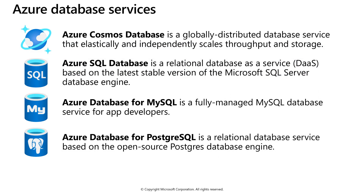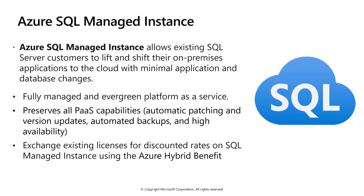The final resource type group is Database Services. Azure Cosmos DB is a globally distributed NoSQL database service that elastically and horizontally independently scales both throughput and storage. Azure SQL Database is a relational database PaaS service based on the latest version of the SQL Server database engine, with backward compatibility. If you host your database on Azure SQL Database, you'll continue to get new features as they're released with no need to take your database offline to perform upgrades. Azure Database for MySQL and Azure Database for PostgreSQL are also available, the latter based on the open-source PostgreSQL database engine.